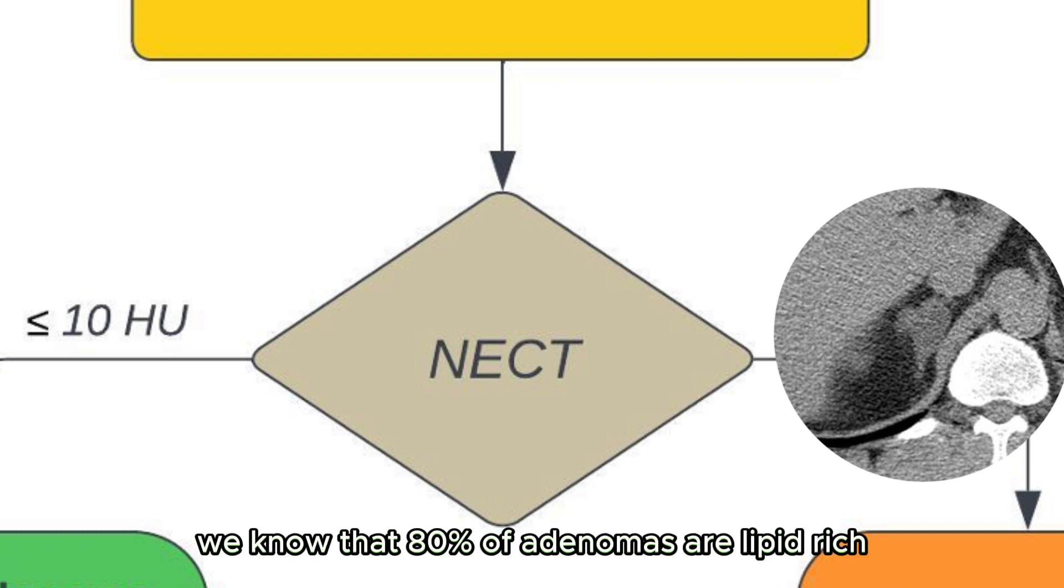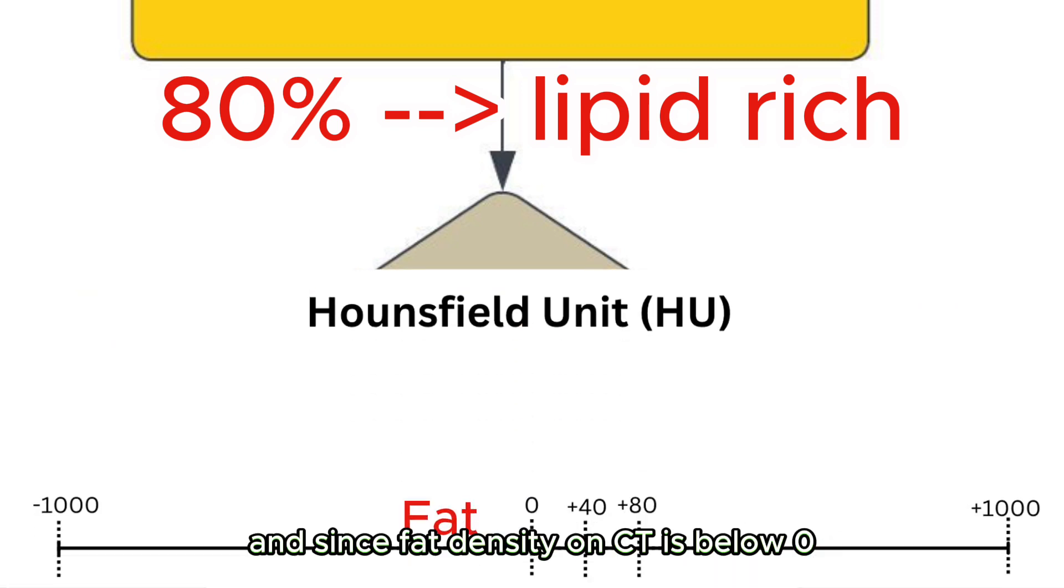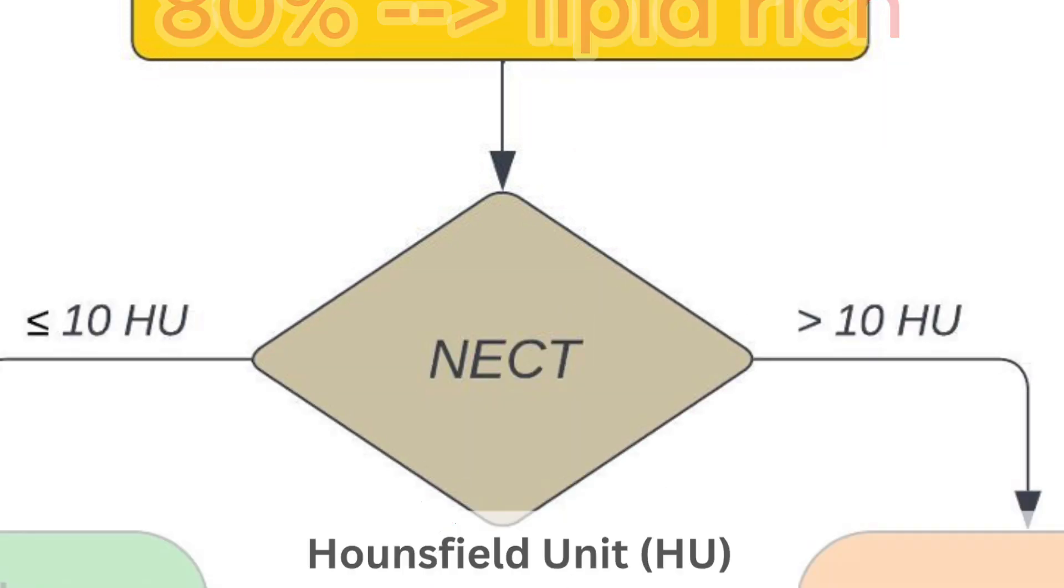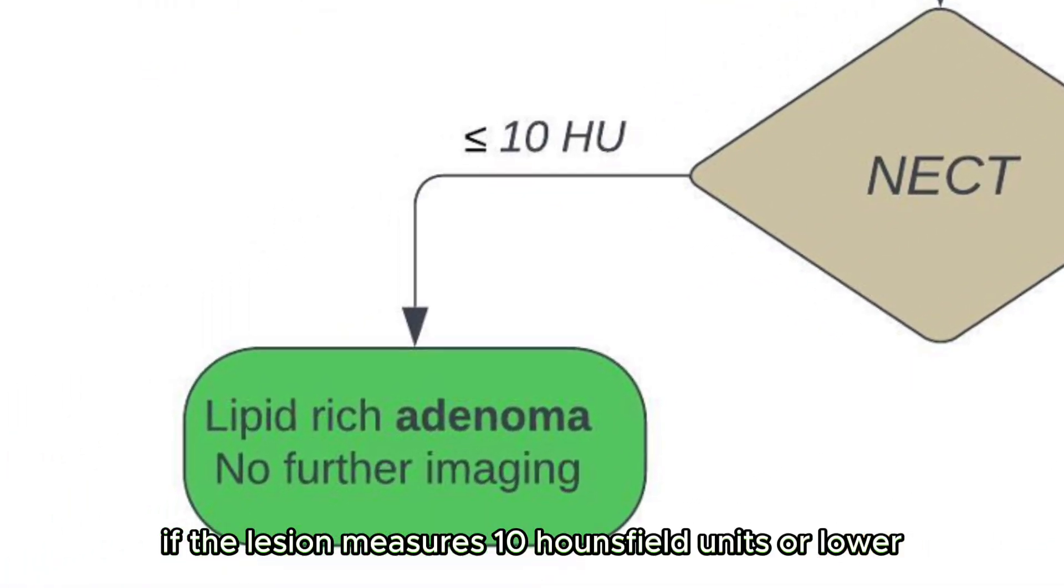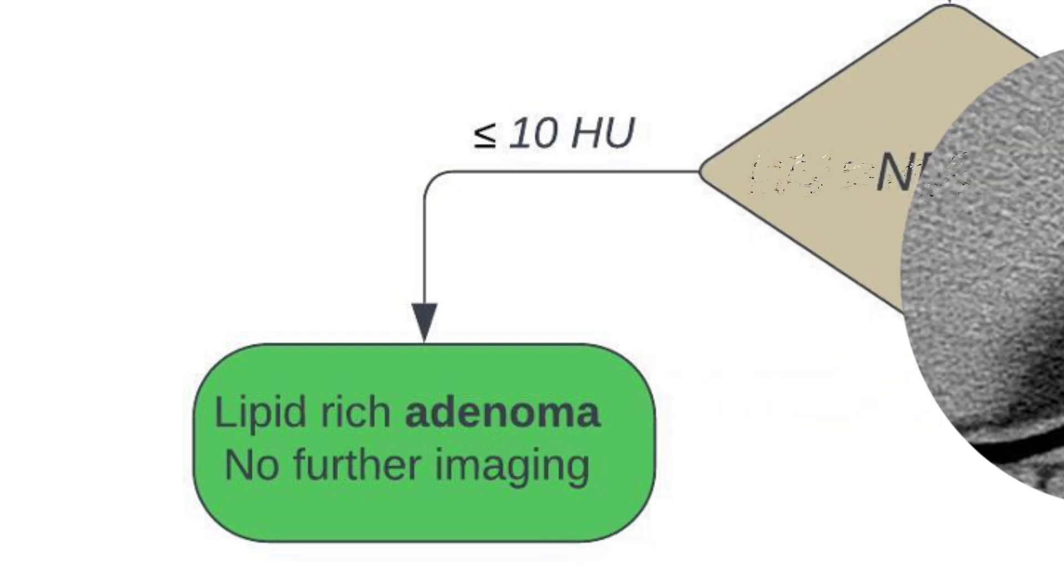We know that 80% of adenomas are lipid rich. And since fat density on CT is below 0 Hounsfield units, we can use the density as the first step. If the lesion measures 10 Hounsfield units or lower, we can reliably diagnose adenoma and no further imaging is required.